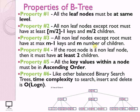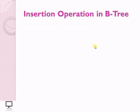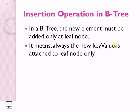Now let's move forward to the algorithm used for the insertion operation in a B-Tree. In a B-Tree, the new key value will always be added at the leaf node only, and we must always keep in mind that all leaf nodes must be at the same level.